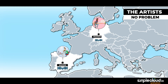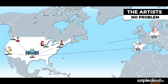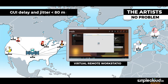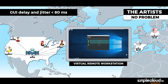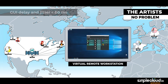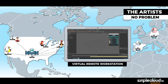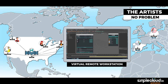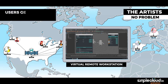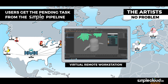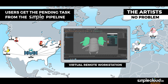Each user connects their virtual workstation desktop to Simple's closest data center, reducing the graphical user interface delay and jitter below 80 milliseconds. All workstation configurations are identical to the pool located in the main data center. New users abroad work just like the other users in John's studio, getting their pending tasks from the Shotgun-based interface.